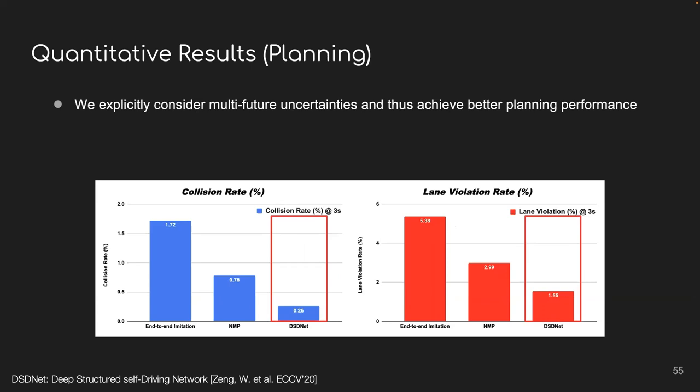And in terms of planning, again, we compare with the imitation learning as well as our previous neural planning work. As you can see here, by explicitly incorporating a dynamic model of the world into the driving process, we now achieve much better planning performance in terms of lower collision rate and also lower lane violation rate.